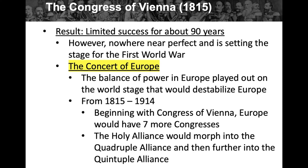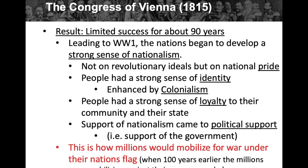Beginning with the Congress of Vienna, Europe would have seven more congresses — all aimed at stabilizing Europe, but in the end destabilizing it. The Holy Alliance morphed into the Quadruple Alliance when Britain joined, and then the Quintuple Alliance when France finally joined. France had all kinds of problems in the first half of the 19th century and then stabilized in the second half and joined the Alliance. This all led up to World War I — from 1815 to 1914, almost 100 years.